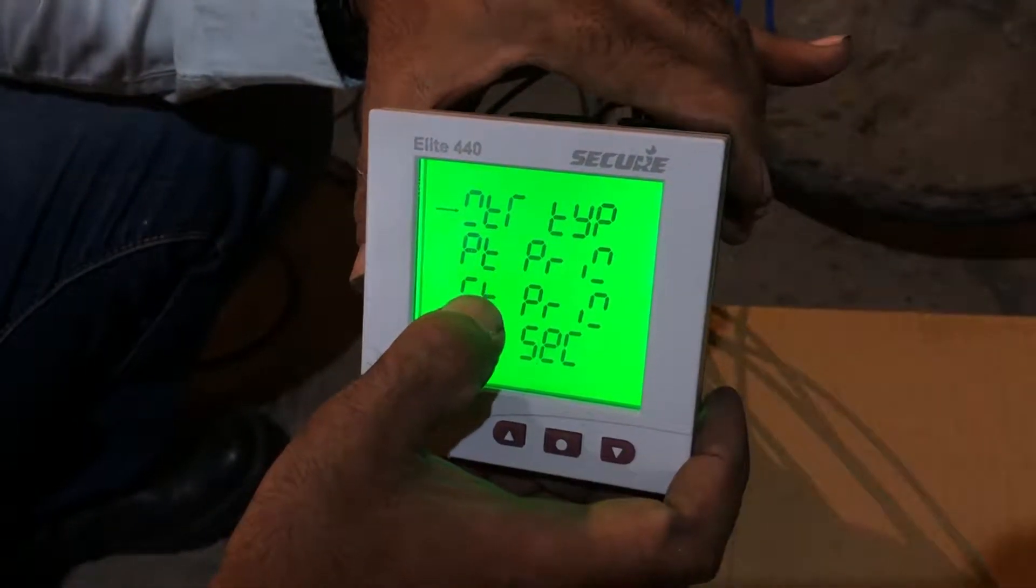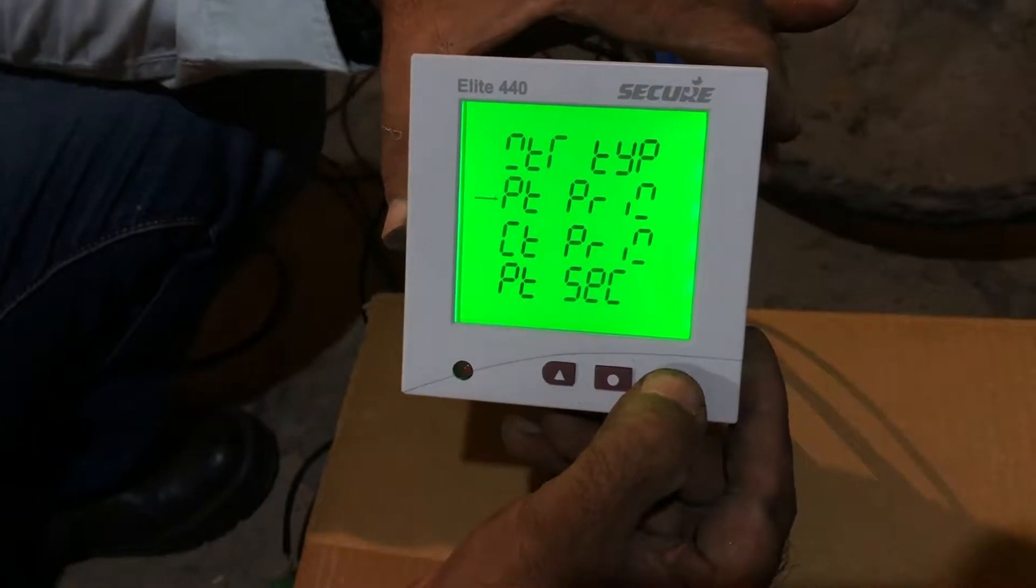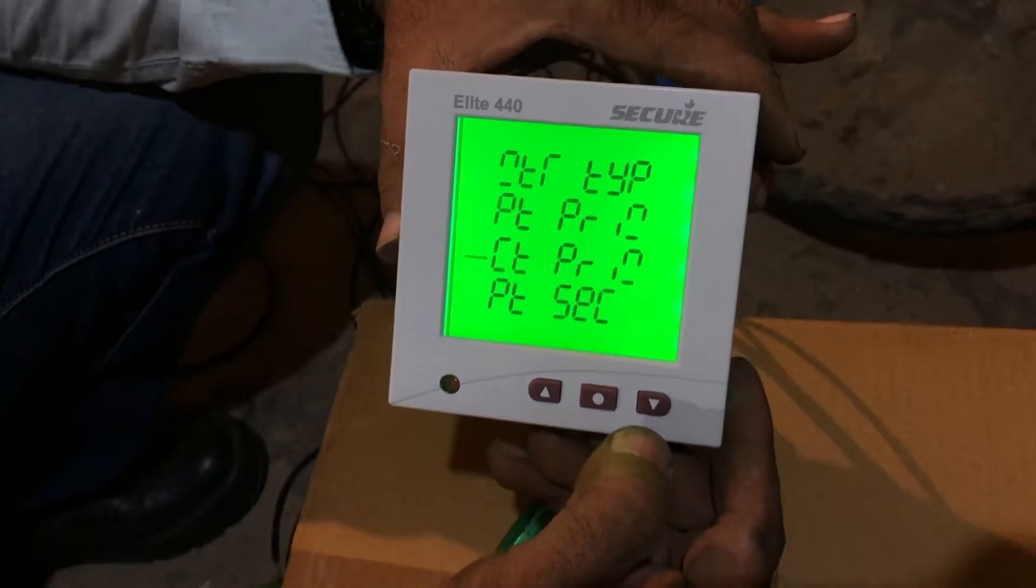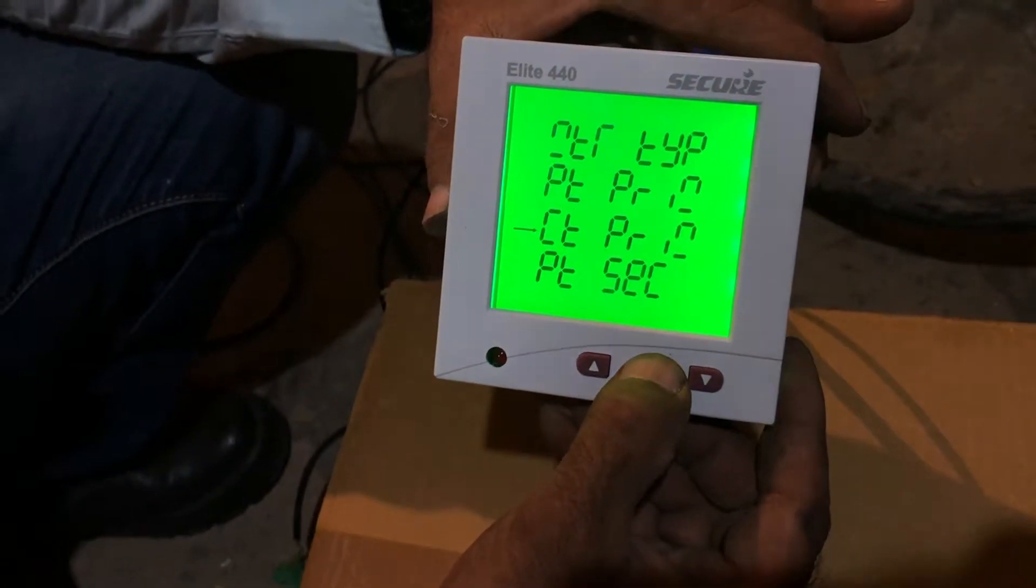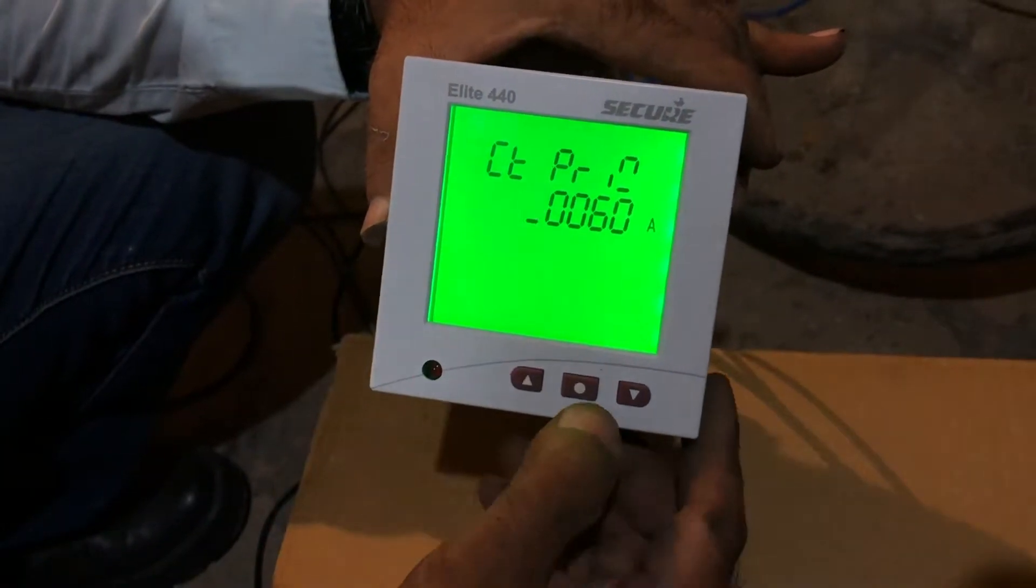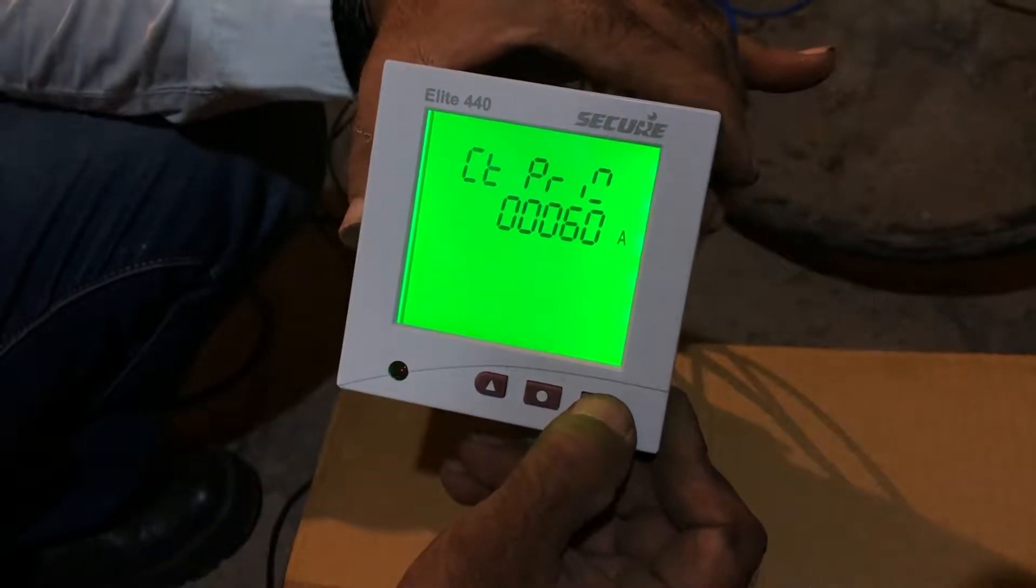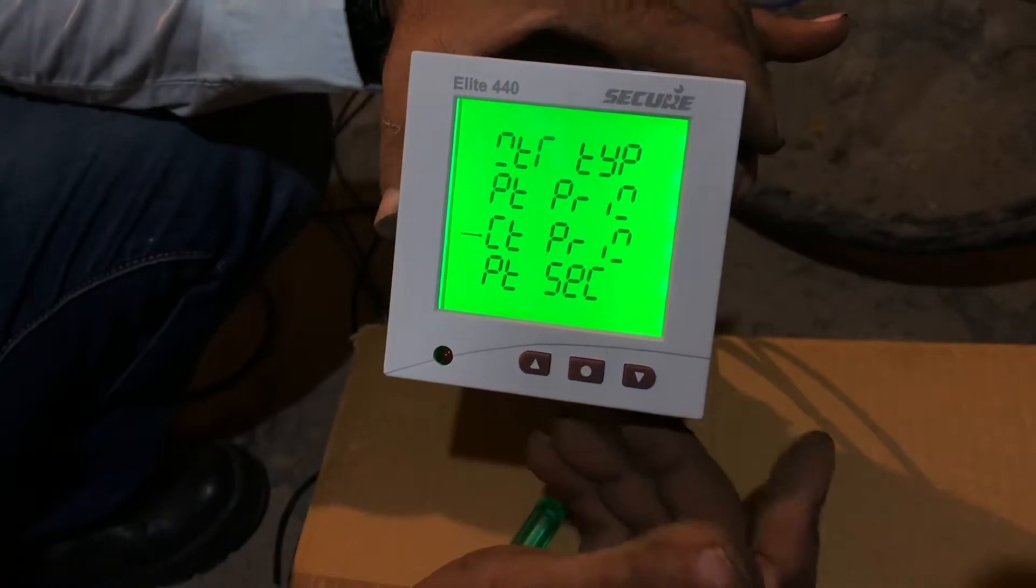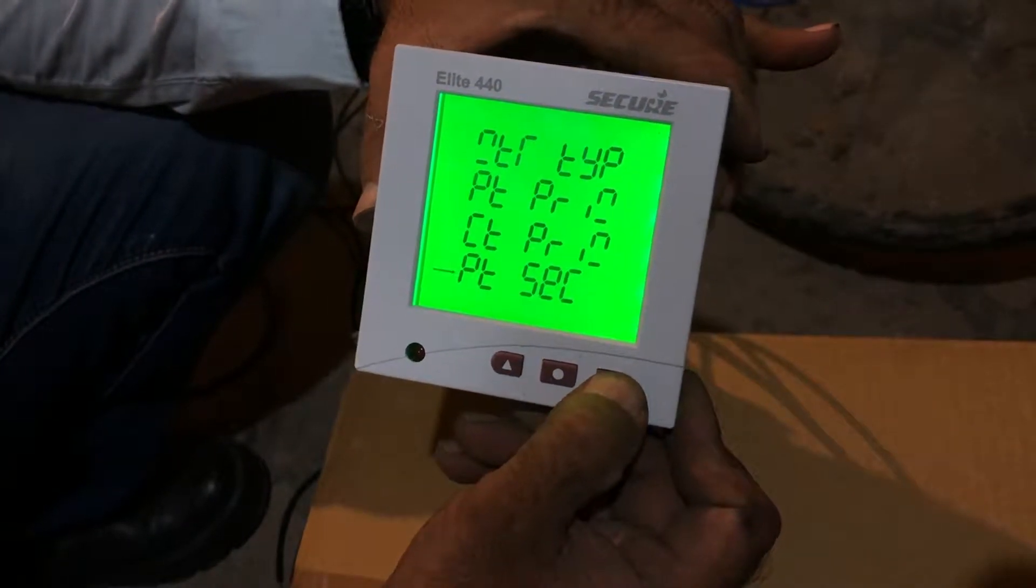Go onto the third menu which says CT parameters. We press enter and put the desired value as mentioned in the CTE using the keys present on the MFM. After putting the primary coil value, we will put the secondary coil value.